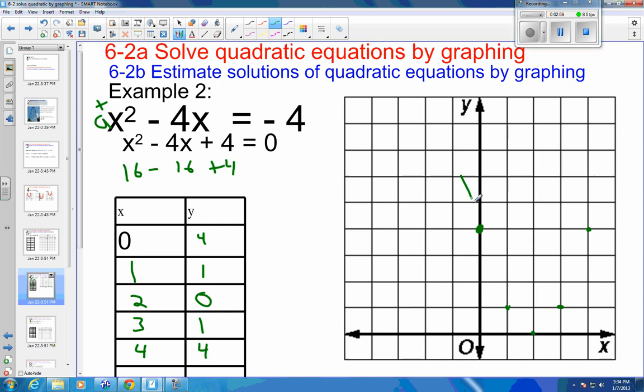And then I can sketch in my parabola coming down. Find my min and back up. Erase that edge off of there a little bit. There we go. So there's my parabola. And the parabolas do go on or quadratics go on forever. So I can put arrows on the end of that.